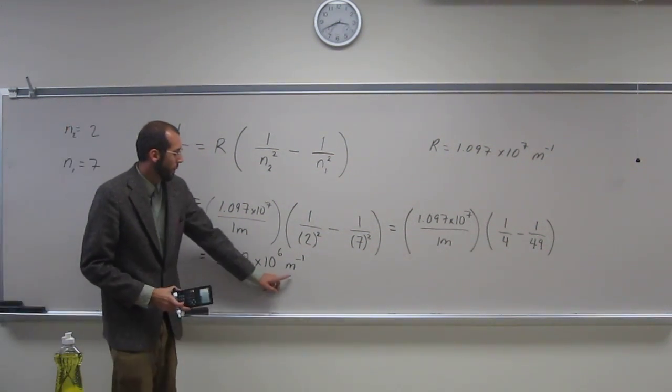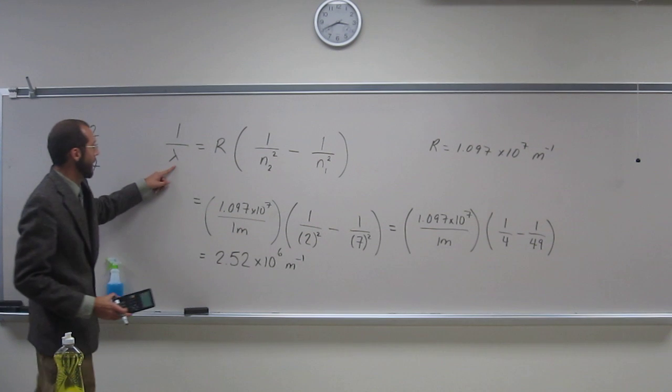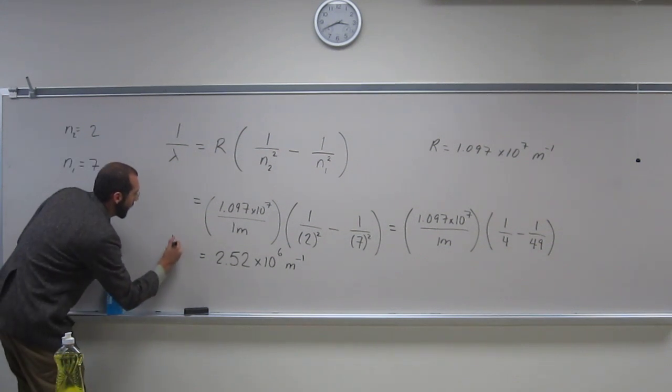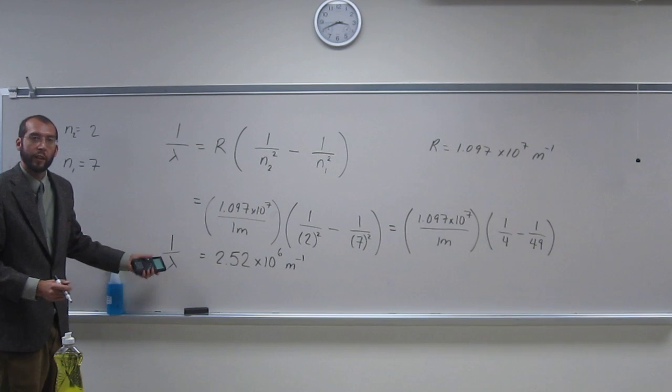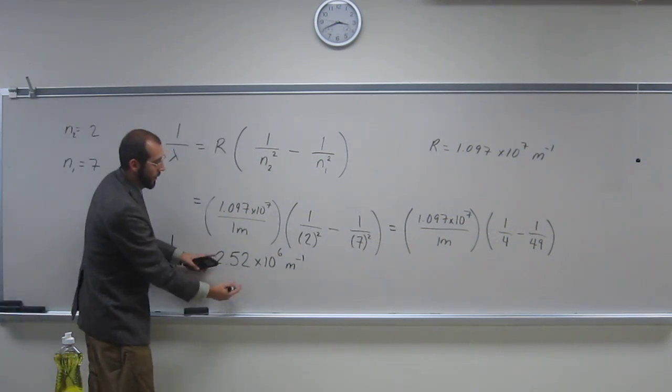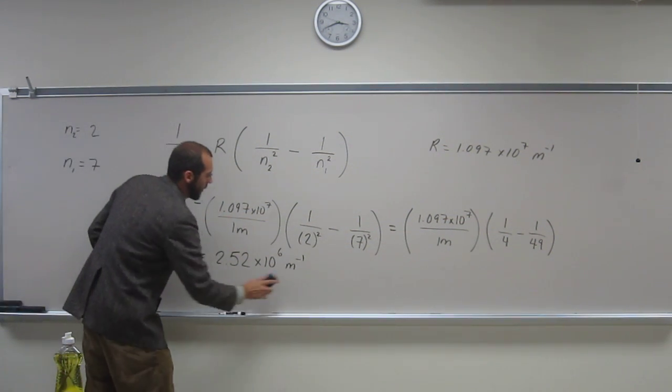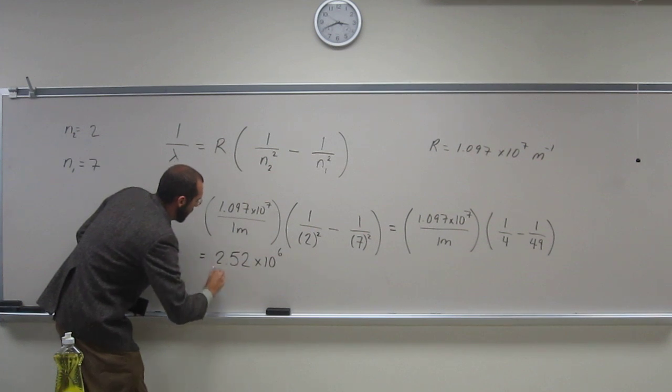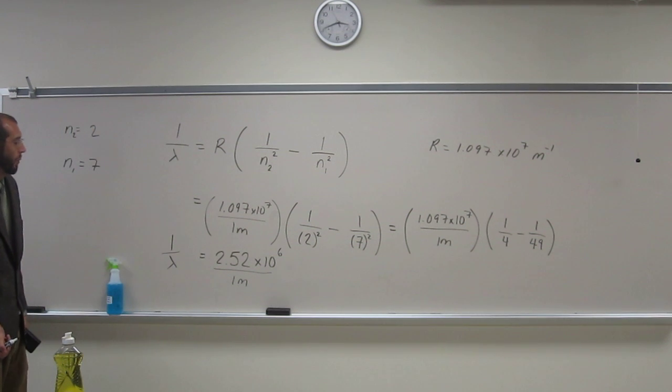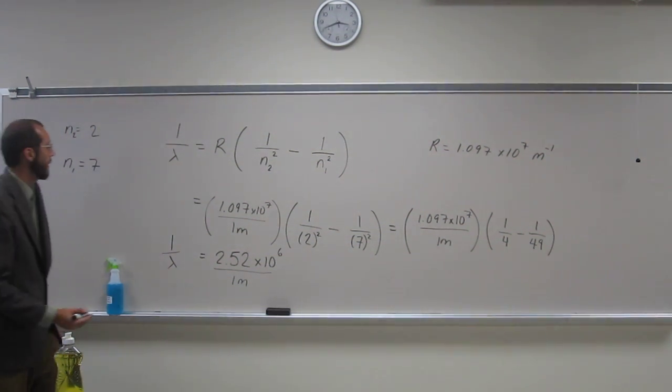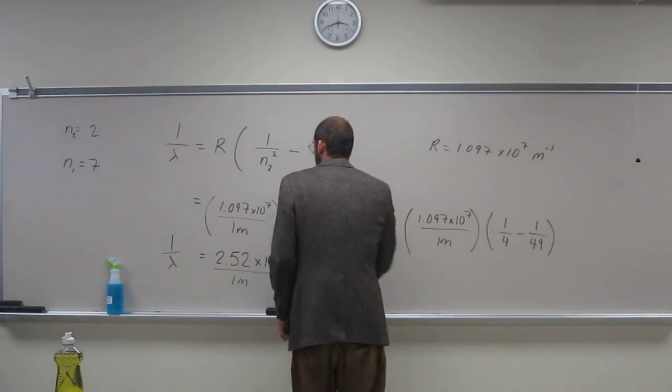So this per meter, this gives us 1 over the wavelength. We want wavelength, so we're going to take this and flip it over. So, take 1 meter and divide it by 2.52 times 10 to the 6.